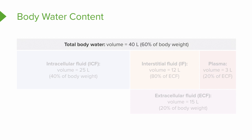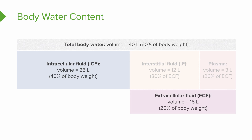If we break down our total body water count, we find that our body contains about 40 liters of water, or fluid, and this makes up about 60% of our total body weight. Our intracellular fluids make up about 25 liters, whereas the extracellular fluid makes up the remaining 15. Of that 15 liters, the interstitial fluid has a volume of about 12 liters, while the plasma has the remaining 3 liters.